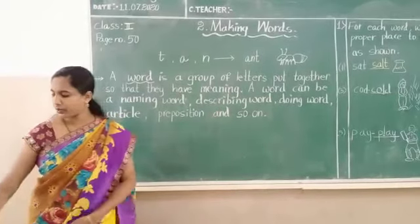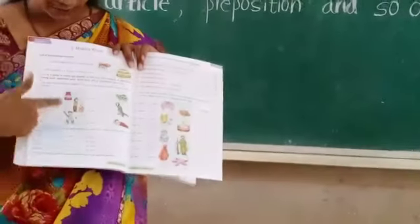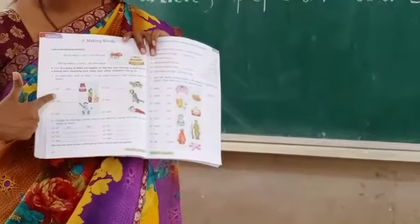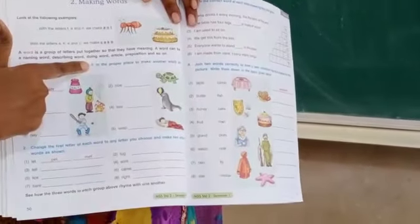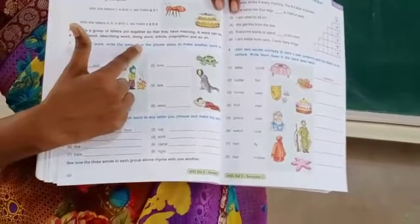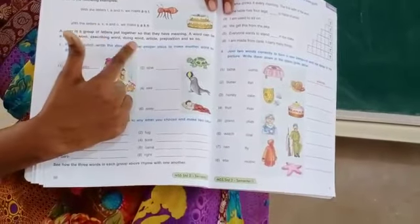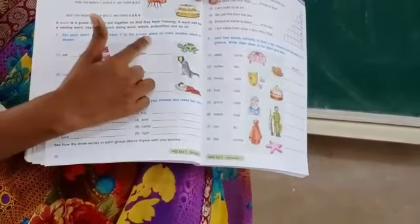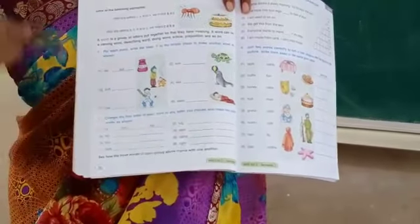Now let's go to this question. First question here — you can see some pictures also. They have some words here and also a blank. What is that question? For each word, write the letter L in the proper place to make another word as shown.